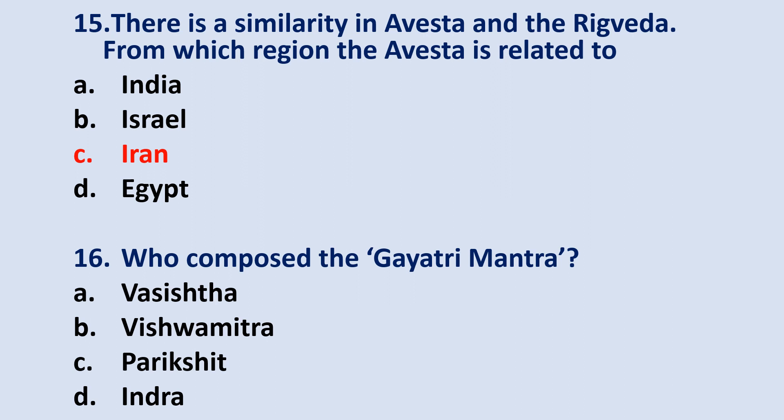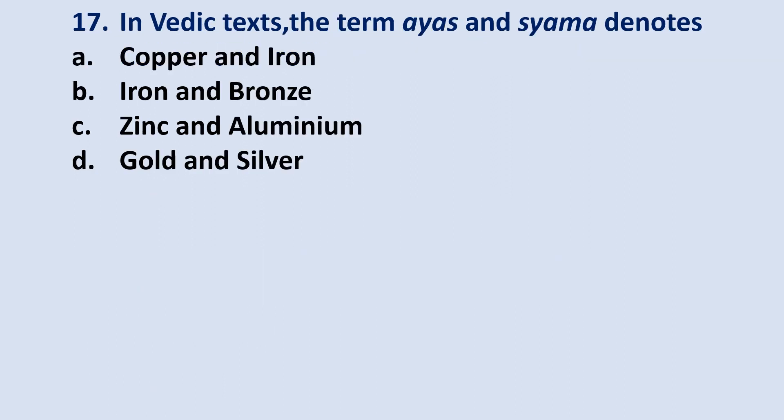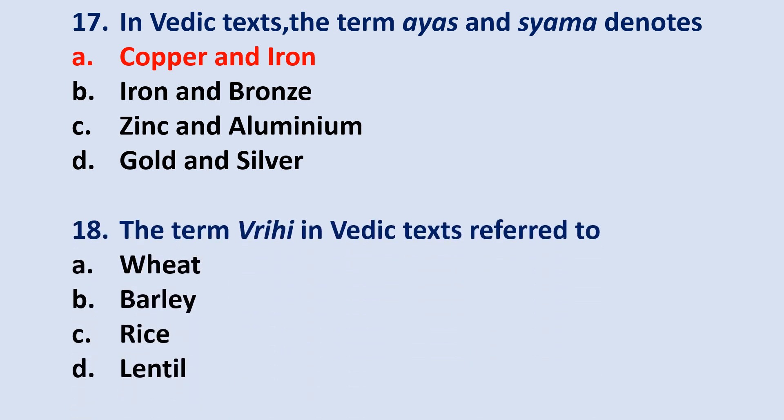Question number 16: who composed the Gayatri Mantra? The answer is option B — Vishwamitra. Question number 17: in Vedic text, the terms Ayas and Shyama denote? The answer is option A — Copper and Iron. Question number 18: the term Vrihi in Vedic text referred to? The answer will be option C — Rice.